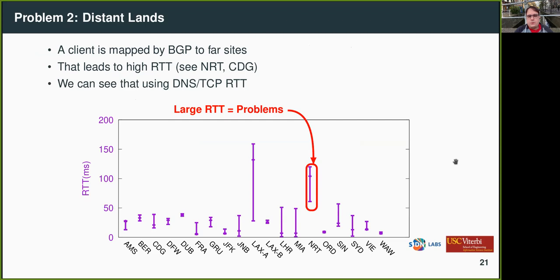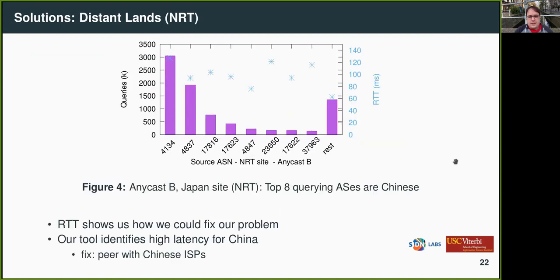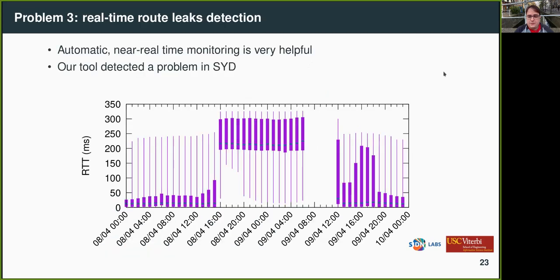Another problem we found is what we call 'distant lands' — it occurs when BGP maps a client to a very far away site. For example, our site in Yorita, Japan was seeing clients with very high latency. We analyzed those clients and found most came from ASes located in China — the top 8 ASes were from China. The RTT showed us how to fix the problem: addressing routing with Chinese ISPs.